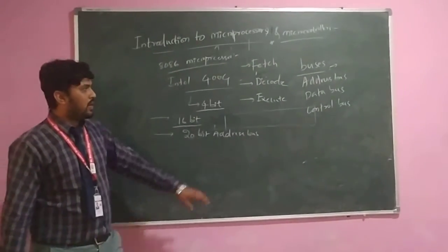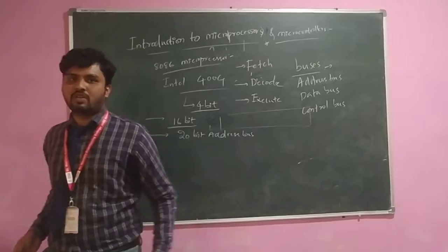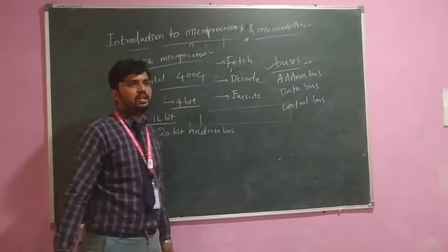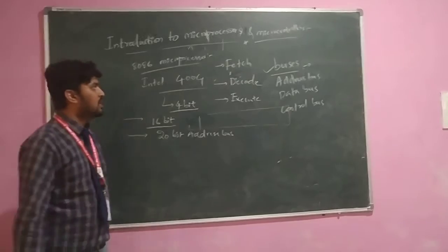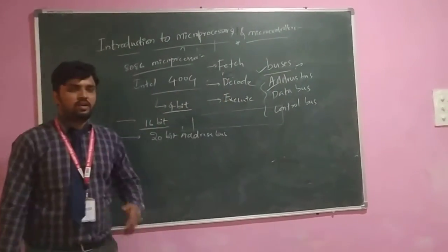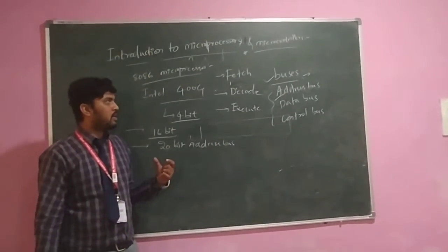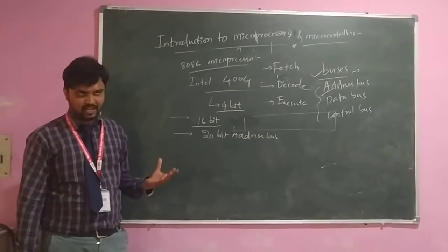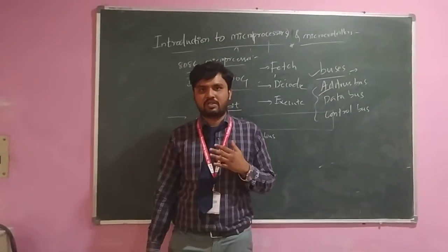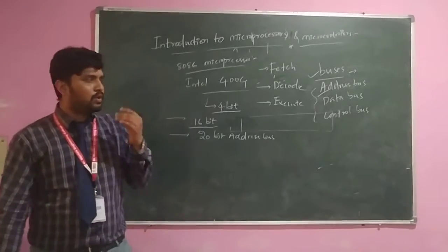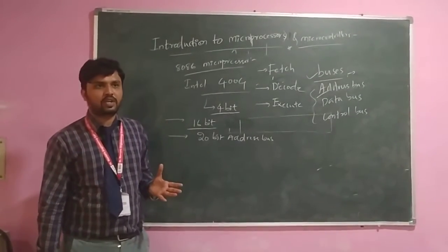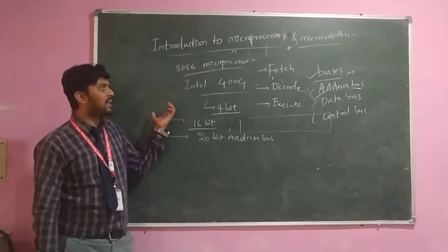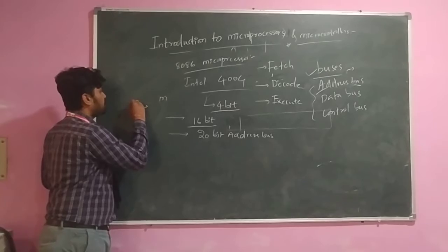What is a bus? Similar to a transportation bus which carries passengers from one place to another, in a microprocessor, buses carry data from one memory location to another. They are divided into three types. First, the address bus — the microprocessor can access data from memory, and to access data from memory we need to know its address. Each memory location in the 8086 microprocessor has its own unique address. By knowing that address, we can access the data in that particular memory location. The address bus carries the address from the processor to the memory location.